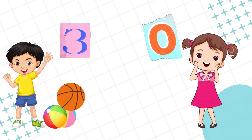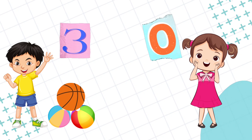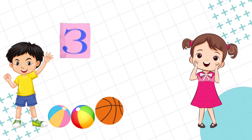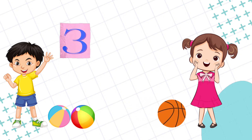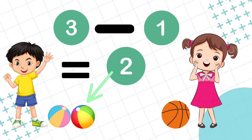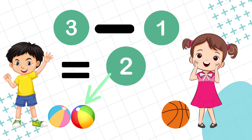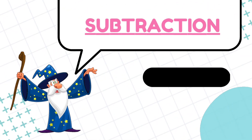Now let's learn about subtraction. Jerry has three balls. If Jerry gives one ball to Molly, then how many balls does Jerry have? That is three minus one — the answer is two, so Jerry has two balls. This is called subtraction.